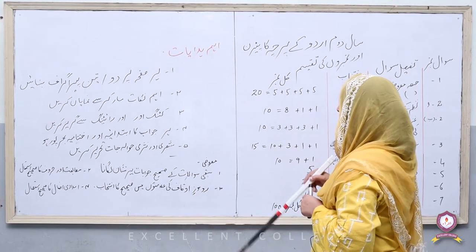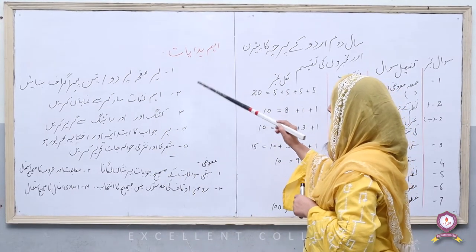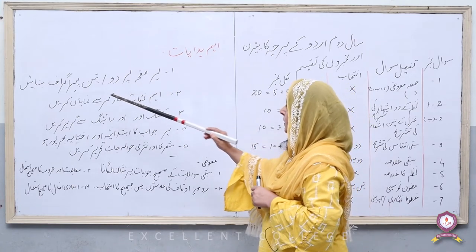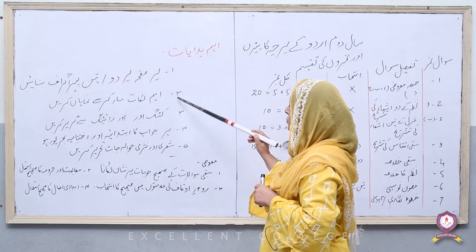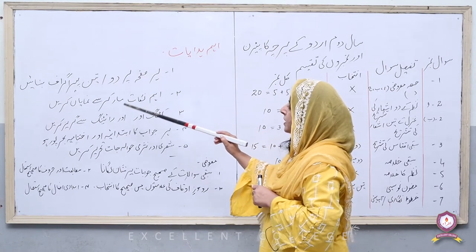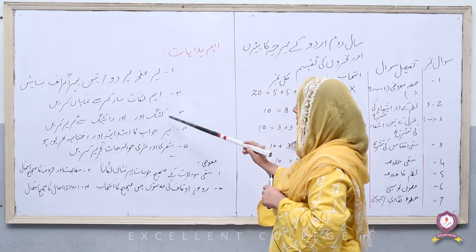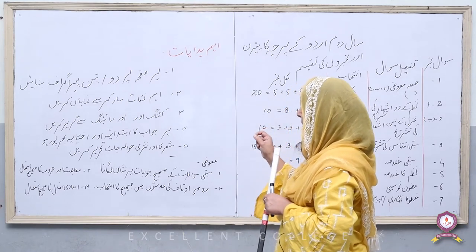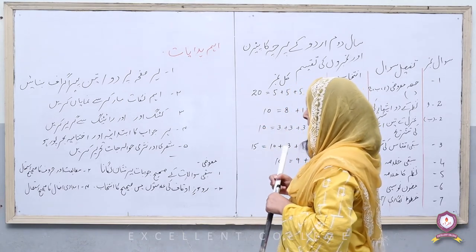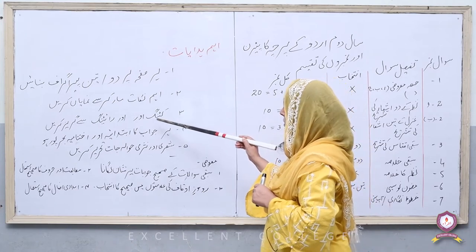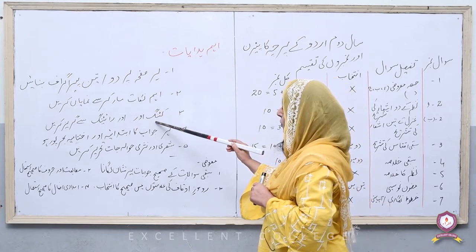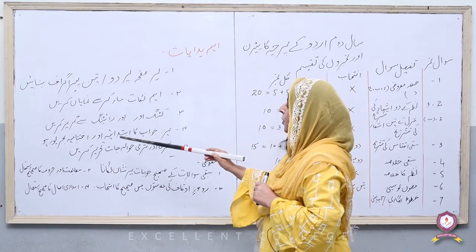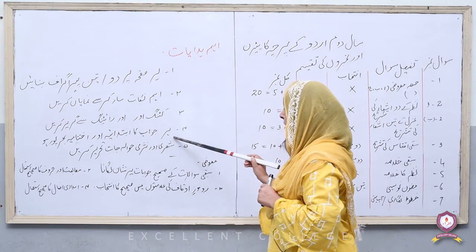اردو کا پیپر کرنے کے لیے اہم ہدایات: پہلی یہ کہ ہر صفحہ پر دو یا تین پیرا گراف بنائیں۔ دوسری یہ کہ اہم نکات کو مارکر سے نمایاں کریں۔ تیسری یہ کہ کٹنگ اور اوور رائٹنگ سے گریز کریں — اگر آپ کٹنگ کریں گے تو پیپر چیک کرنے والا آپ کے مارکس کاٹ لے گا۔